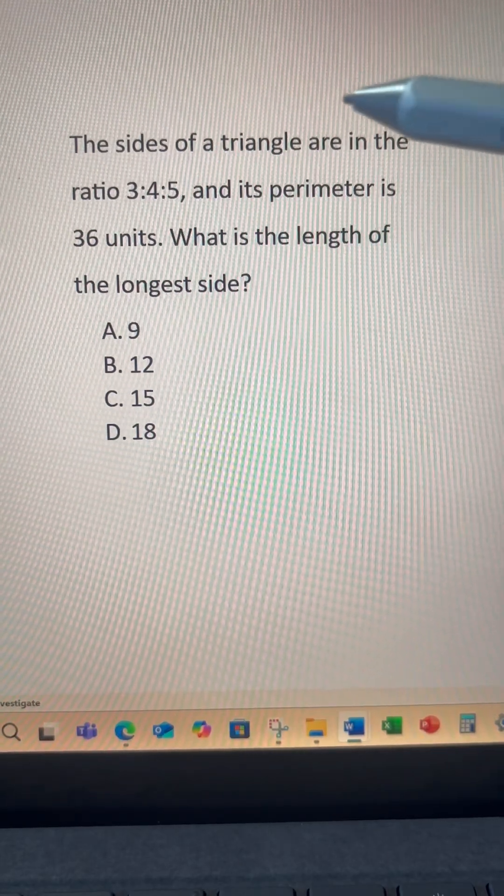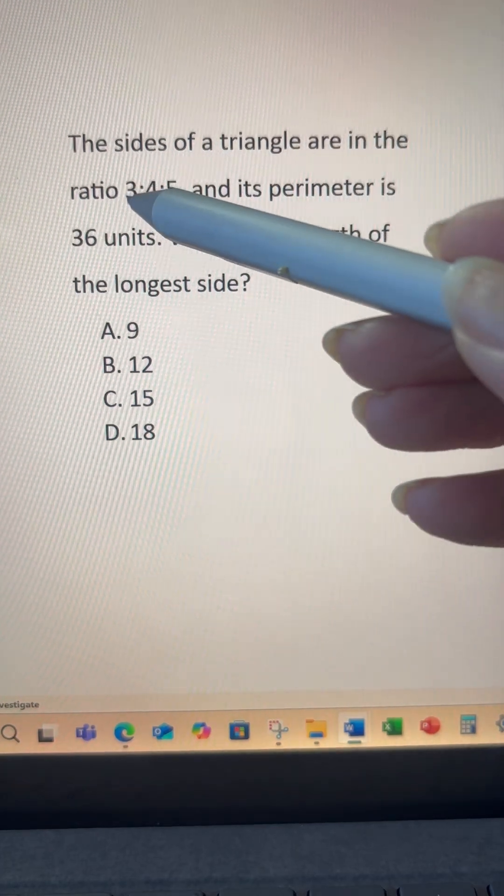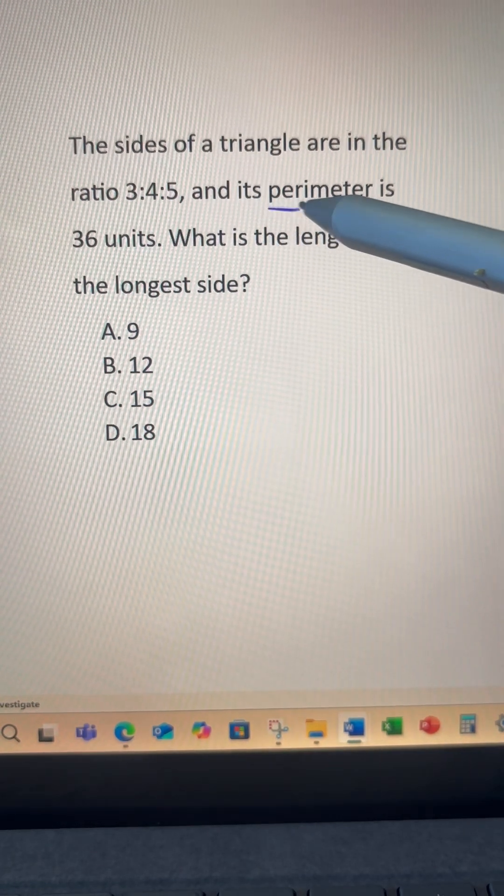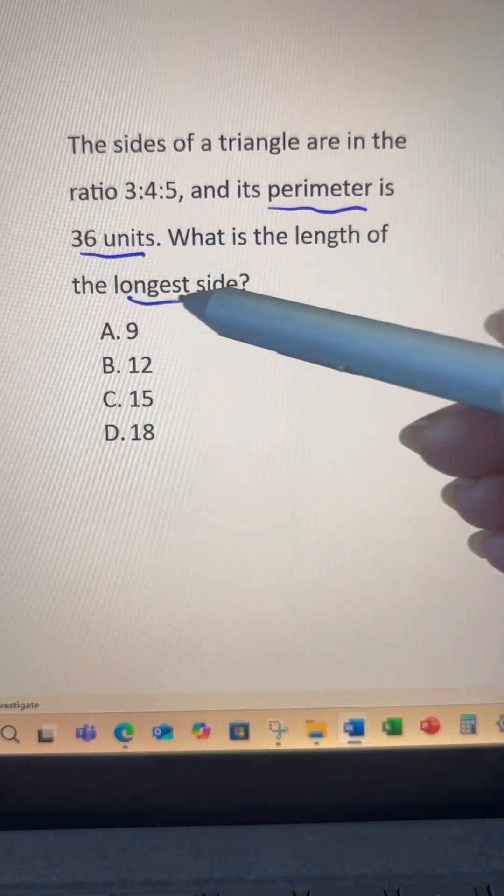Here is a digital SAT question about triangle ratio. The sides of a triangle are in the ratio 3, 4, 5 and its perimeter is 36 units. What is the length of the longest side?